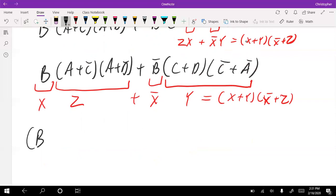I have B plus y. Y is C plus D times C bar plus A bar. The terms are B bar plus A plus C bar times A plus D bar.